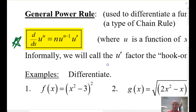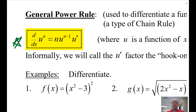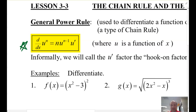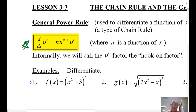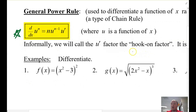So here I just want to cover this. The derivative of u raised to the power of n — if we use the power rule, it's n times u to the power of n minus 1, but then you also have to take the derivative of whatever u is, or whatever's inside. They call this the hook-on factor.